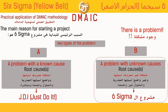The first type of problem is one where we know the root cause and we also know the solution. The second type is a problem where the root cause is unknown and we don't have any solution for it. Which one of these will be considered a Six Sigma project?